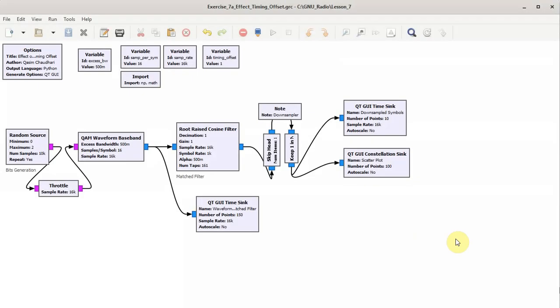This is a demonstration of the effect of timing offset on the down-sampled matched filter outputs. This is the excess bandwidth variable which is chosen as 0.5, the samples per symbol are 16, and the sample rate is 16,000. The timing offset in this case, because it's a root raised cosine filter, there is no timing offset here.